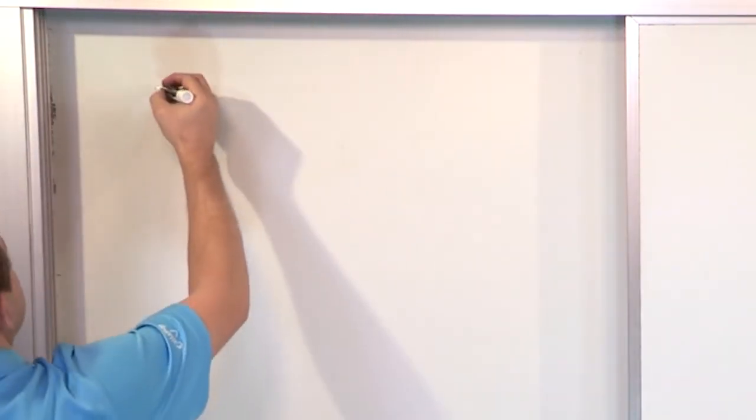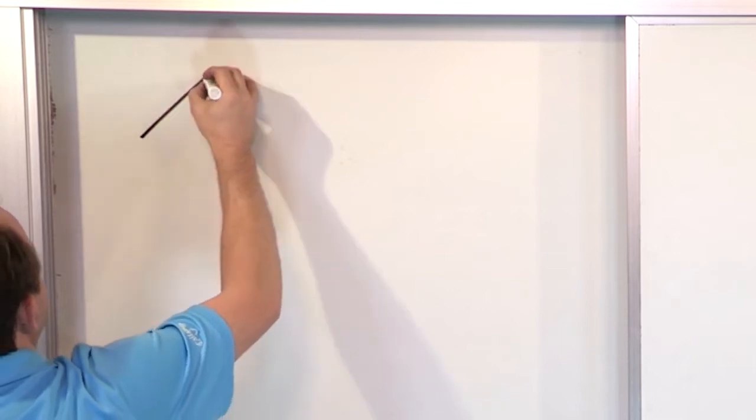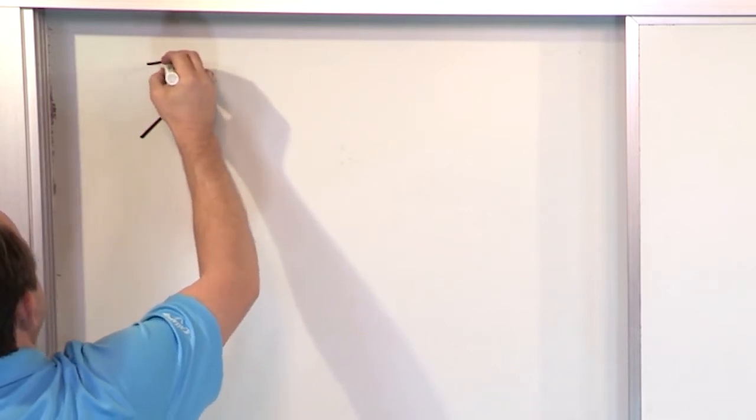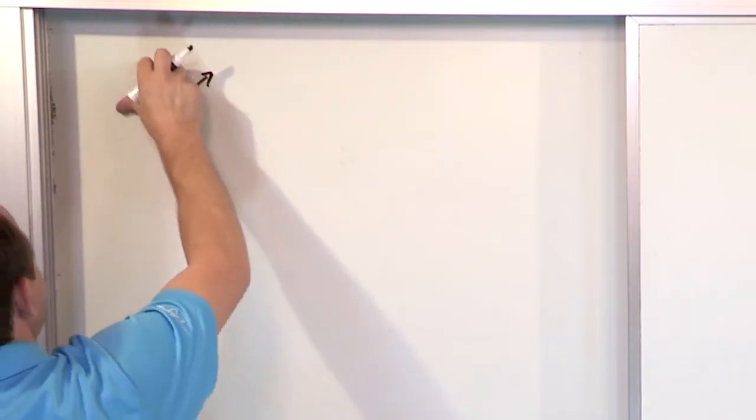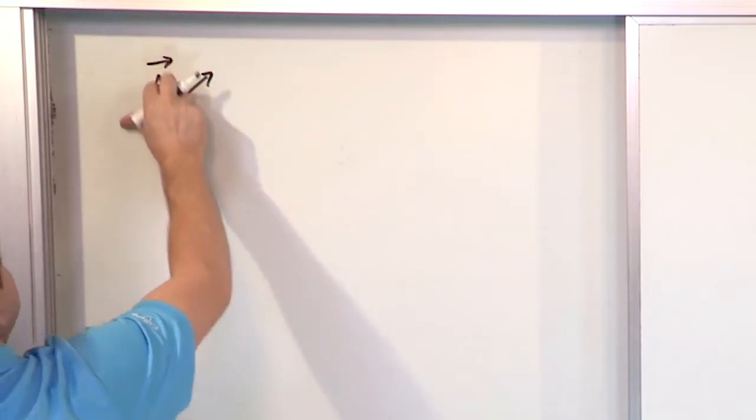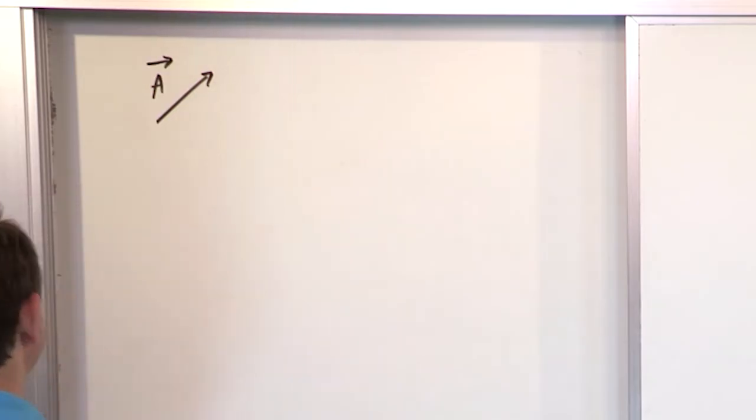So let's say you have a vector a. If the vector a is this long, actually make it slightly shorter, it'll make my drawings a little easier. Let's say the vector is about that long and pointed in that direction.